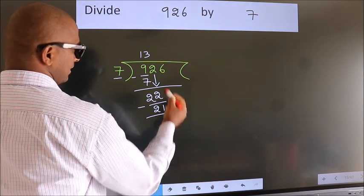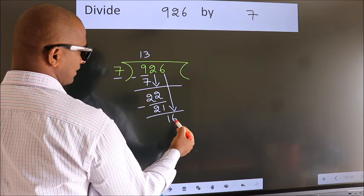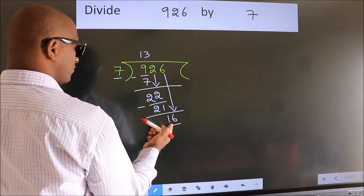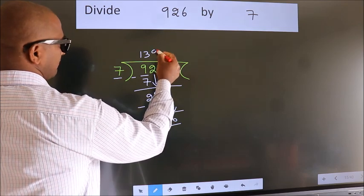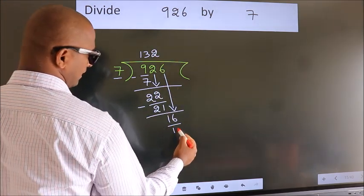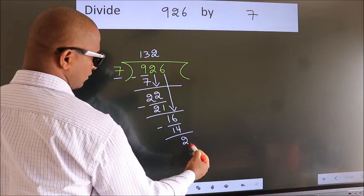After this, bring down the beside number. Bring the 6 down. So 16. A number close to 16 in the 7 table is 7 times 2 is 14. Now we subtract. We get 2.